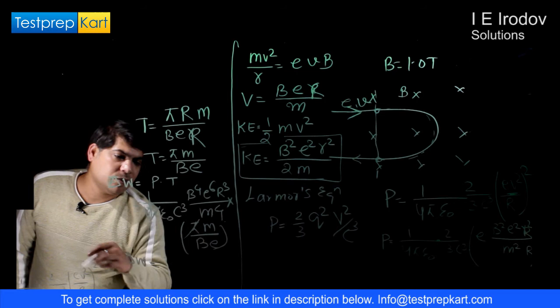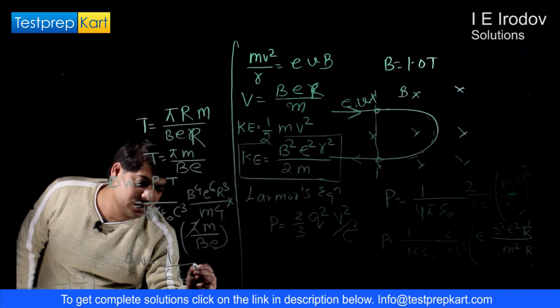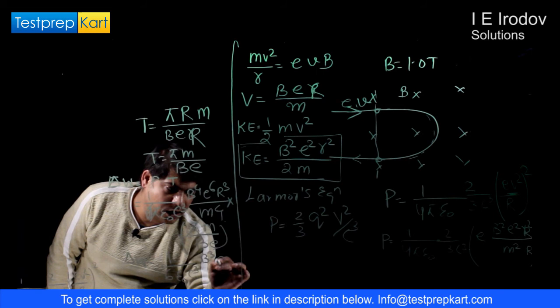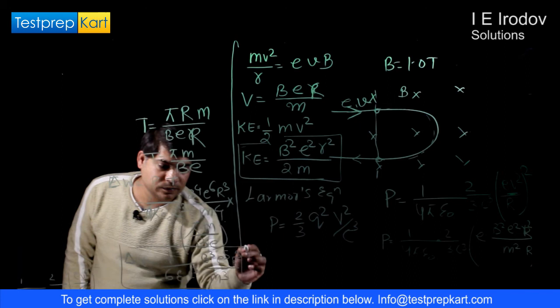So once we can again just simplify this expression. Let us take what common terms are. We can cancel π. We can cancel 1 power of m. So let us write a fresh equation that 1/(6ε₀c³) into B³e⁵r³ divided by m³. This is radiated energy.